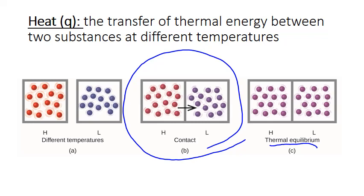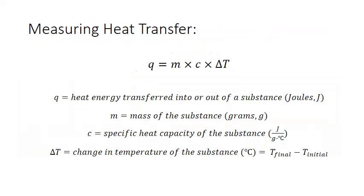So because the transfer of thermal energy or heat involves a change in temperature, we can easily measure the change. And we can use the temperature change to quantify the amount of energy transferred. Heat transfer is quantified using the heat capacity formula, where Q is the variable that we use to represent heat. It's the heat energy transferred into or out of a substance, and it's measured in units of joules, which is abbreviated with the capital J.